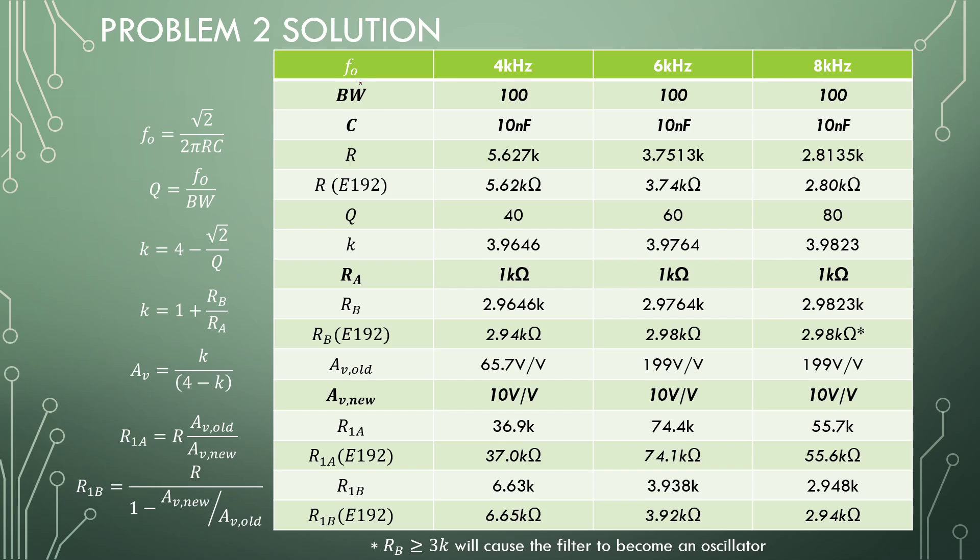So I tabulated everything. First column is the frequency that we want, then the bandwidth, and from the frequency and the bandwidth we can calculate our Q-factors. So we have 40, 60, and 80. With a frequency and a choice of a capacitor of 10 nanofarads we can calculate the resistor value. So E192s, so 5.62, 3.74, and 2.8 kilo-ohms. So this is the R value for each one of these filters. So from the Q-factor we get the gain and we can find the gain for each, and you'll see that each one of these is very close to 4. So this is almost resonating or being an oscillator.